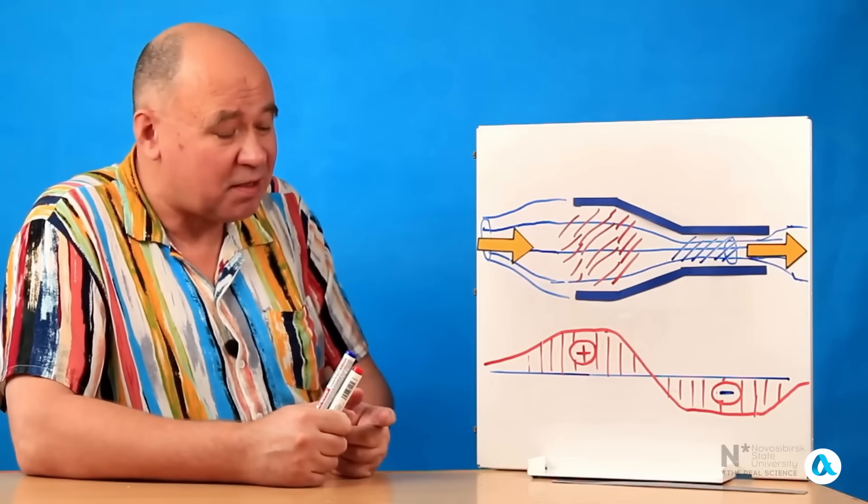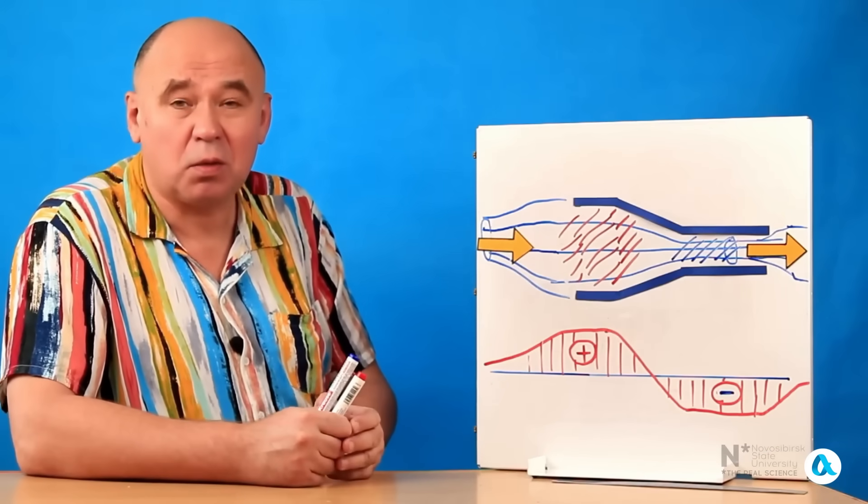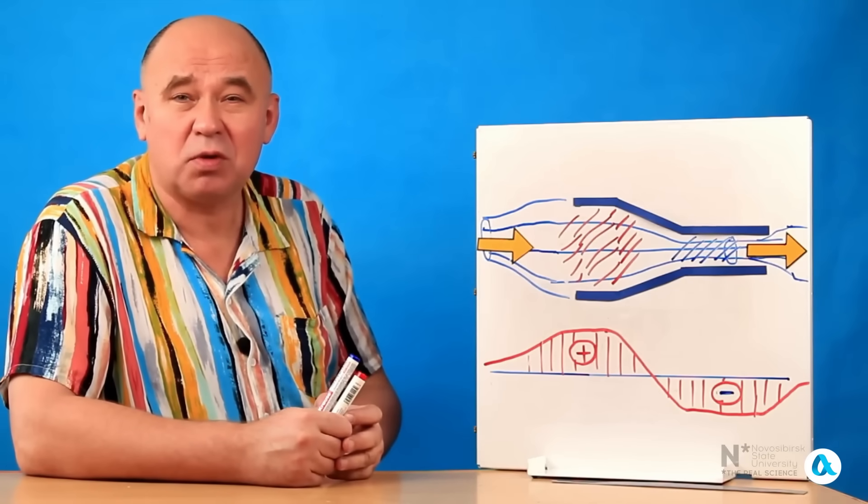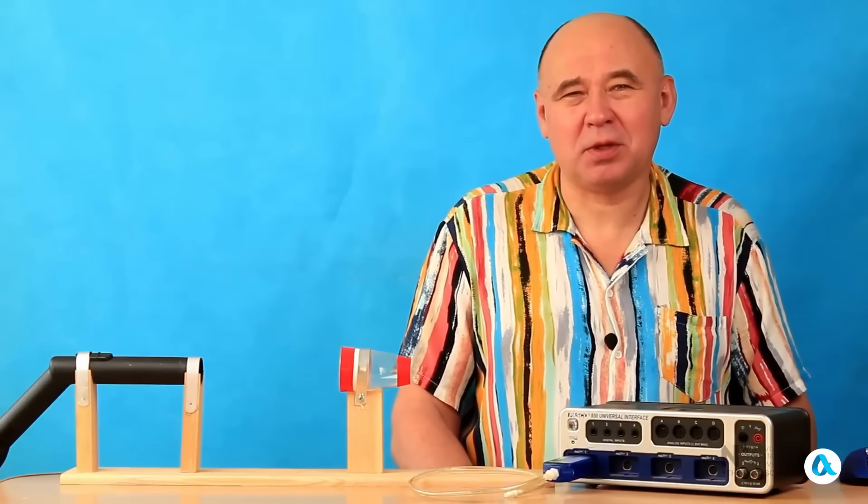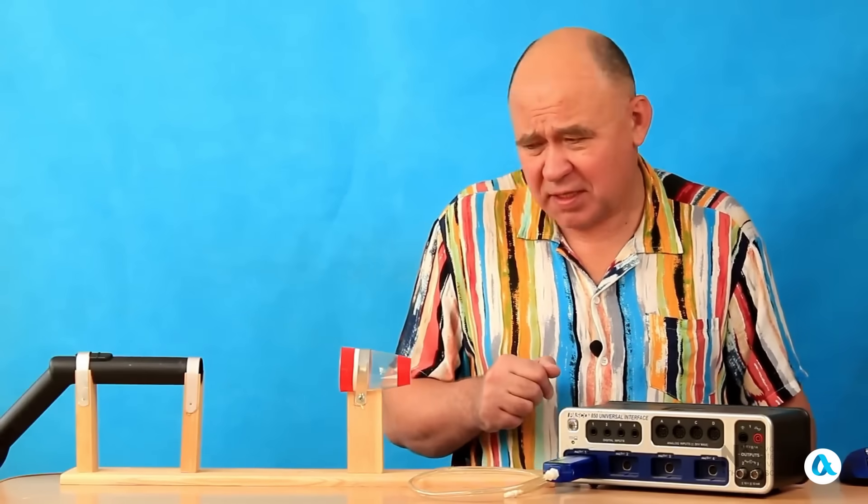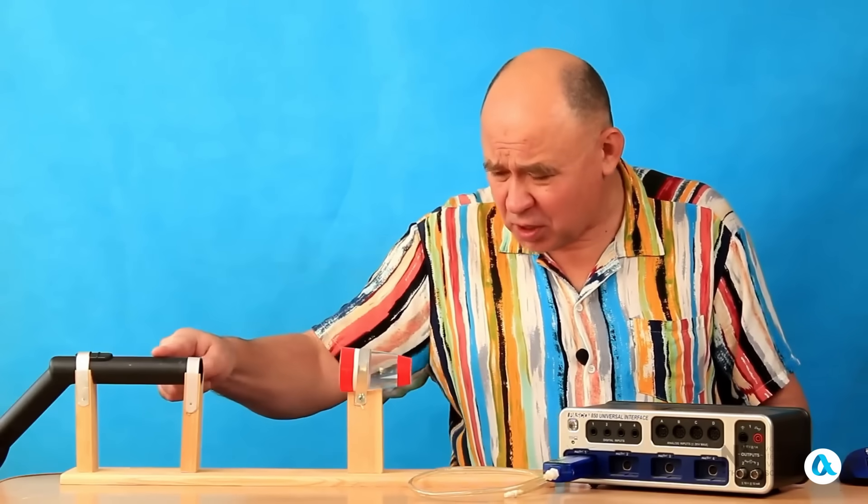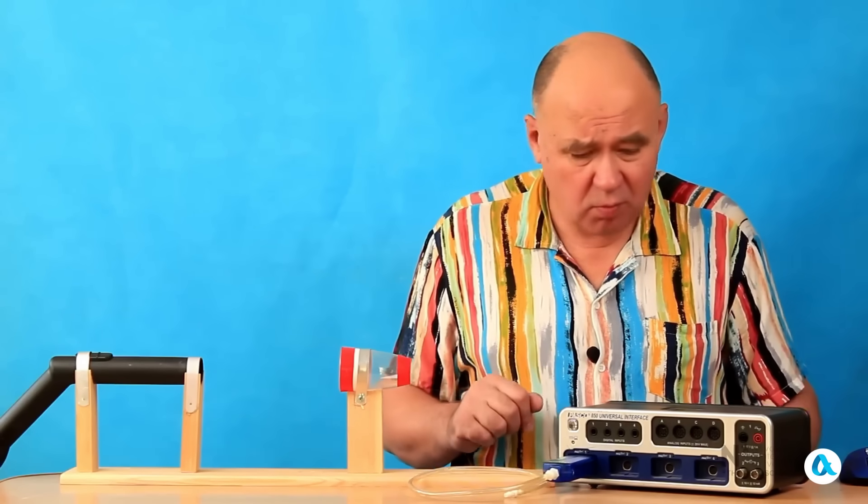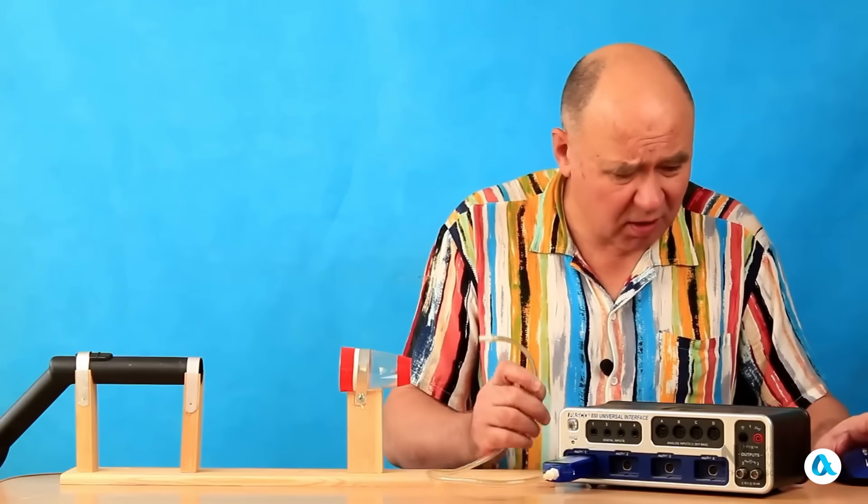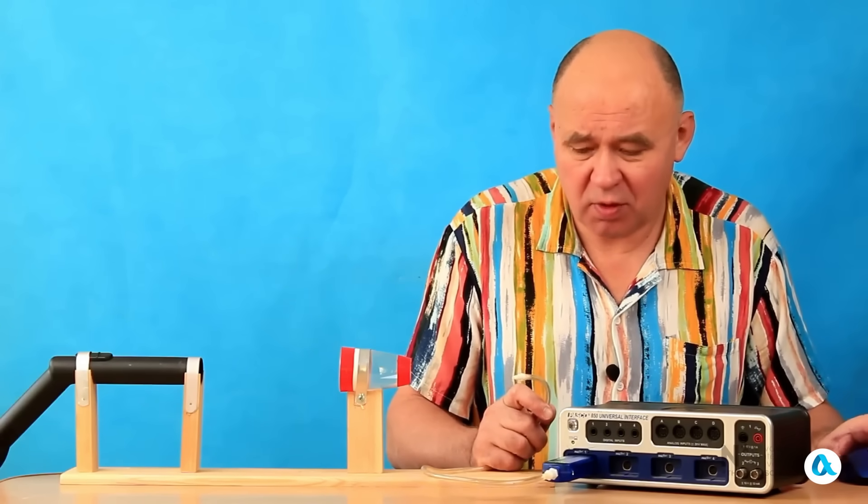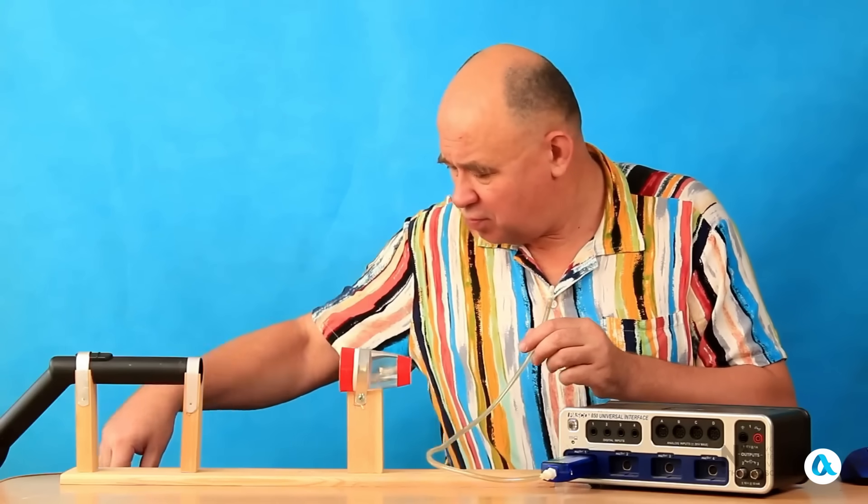Well, in any case, we can try to measure the pressure in some kind of narrowing tube, which is what we're going to do now. And for this purpose, I put together this rather primitive setup. This is definitely not an aerodynamic tube, just a vacuum cleaner hose. Here, on the contrary, there's a narrowing cup with a cut-off bottom. And I also have a relative pressure sensor, which is a device that measures pressure relative to atmospheric pressure. Here, starting it up. We see that the pressure relative to atmospheric pressure is zero.